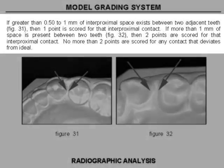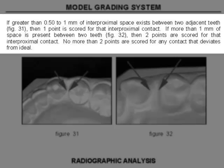If greater than 0.5 to 1 mm of interproximal space exists between two adjacent teeth, then one point is scored for that interproximal contact. If more than 1 mm of space is present between two teeth, then two points are scored for that interproximal contact. No more than two points are scored for any contact that deviates from ideal.